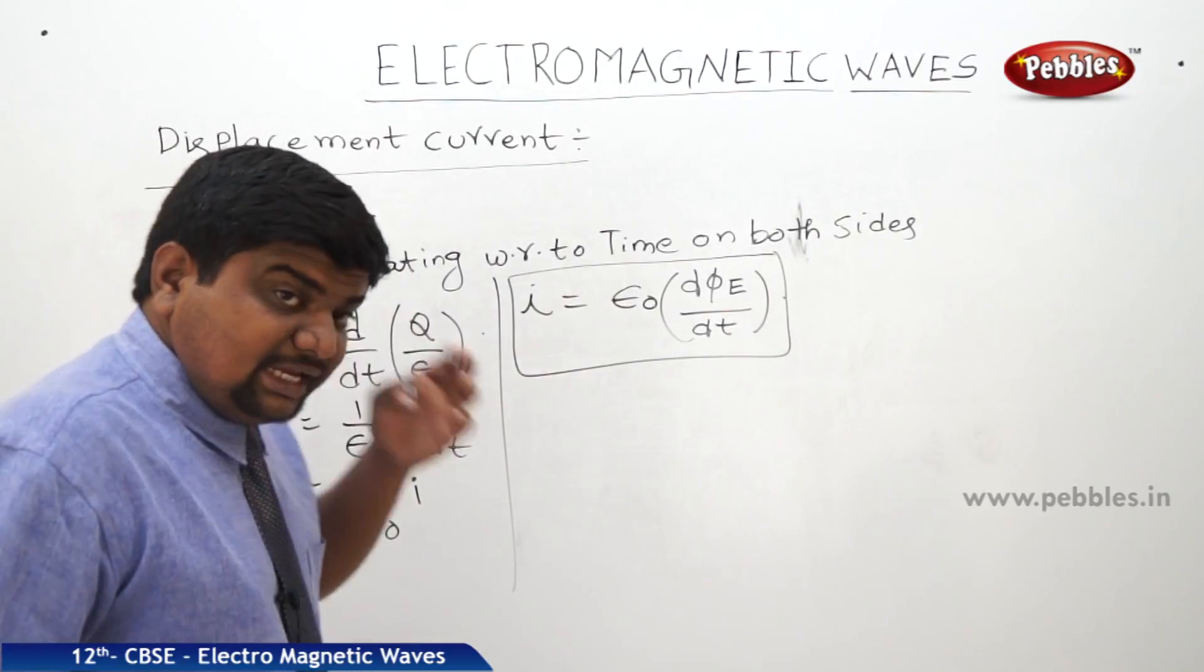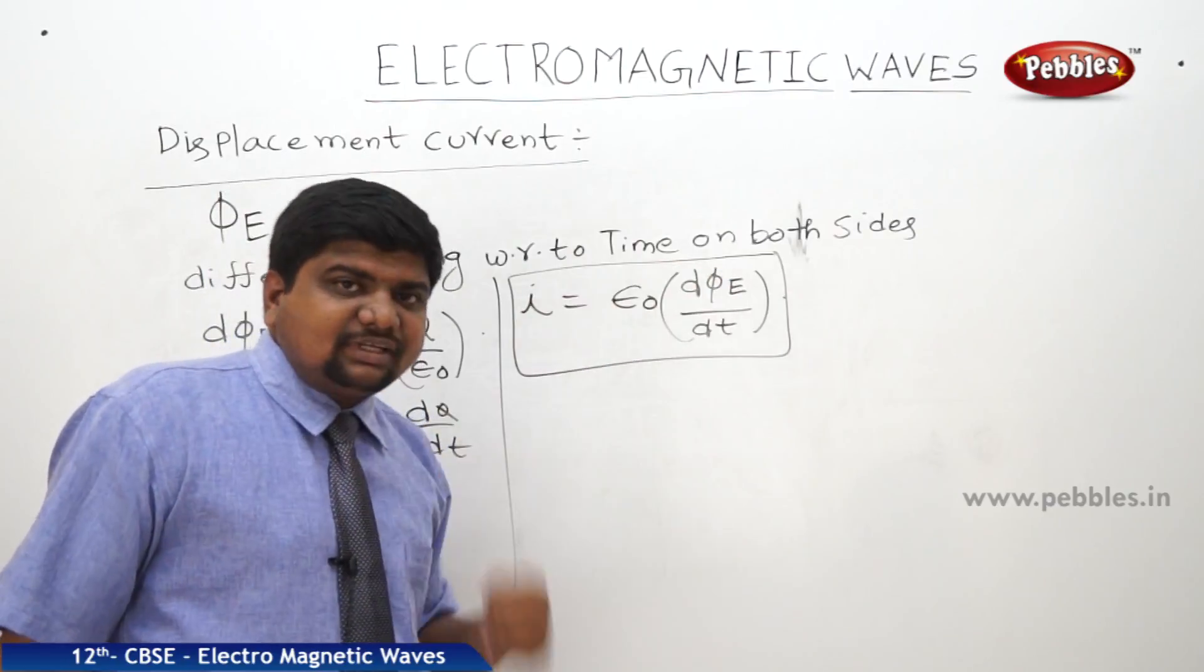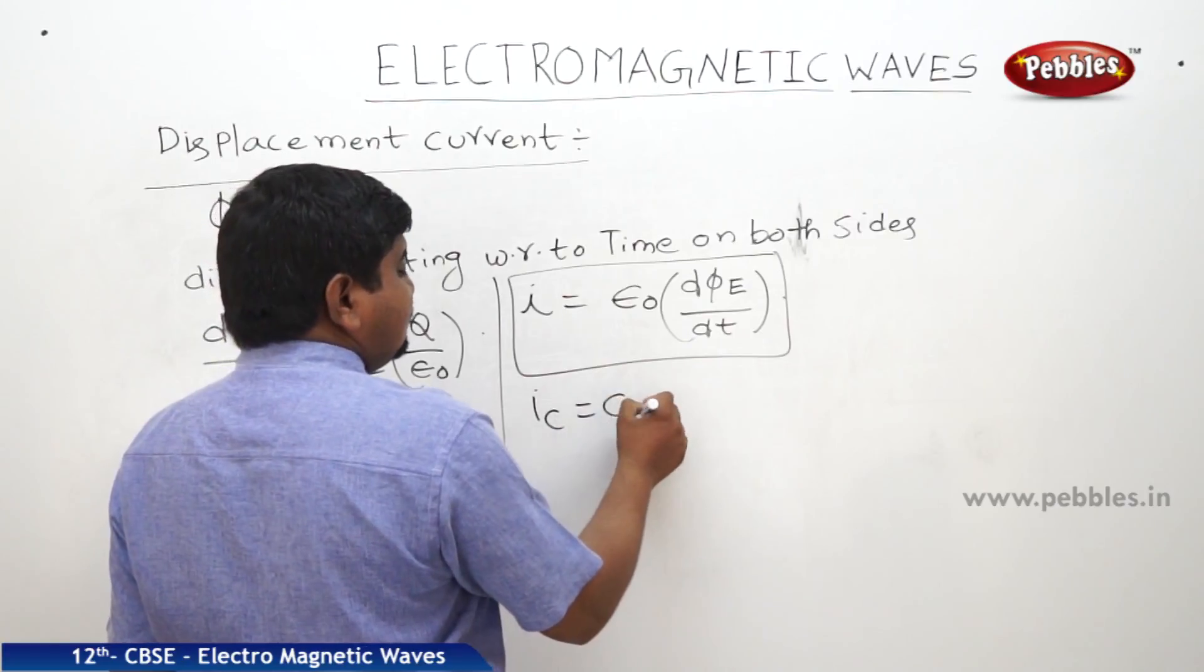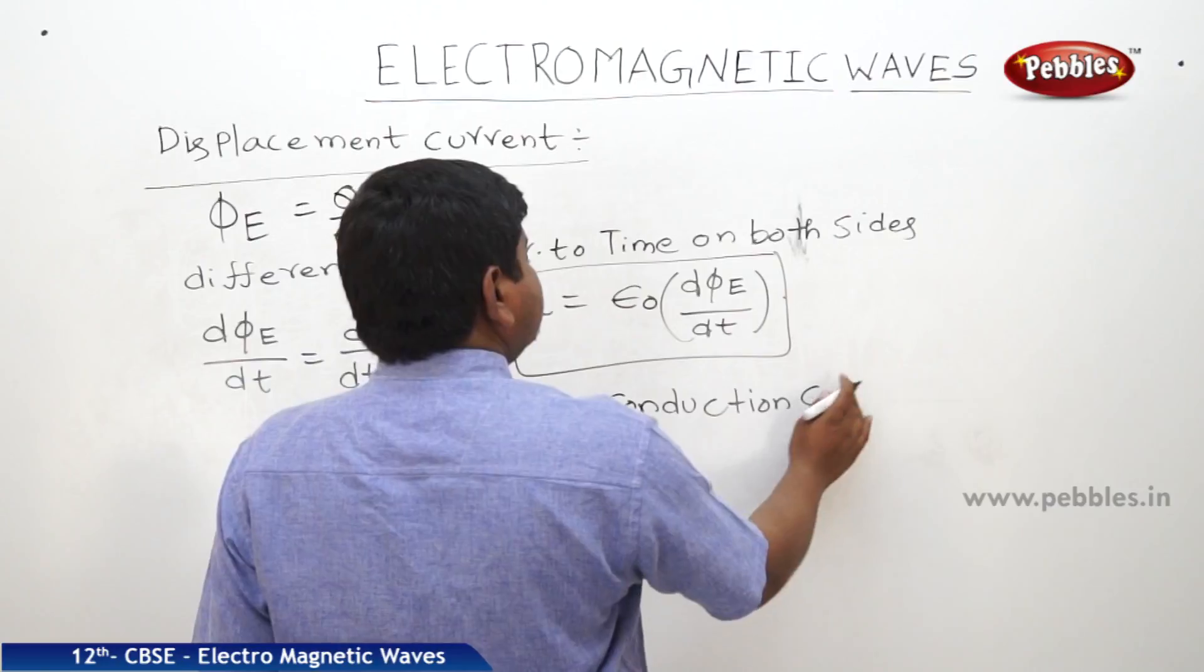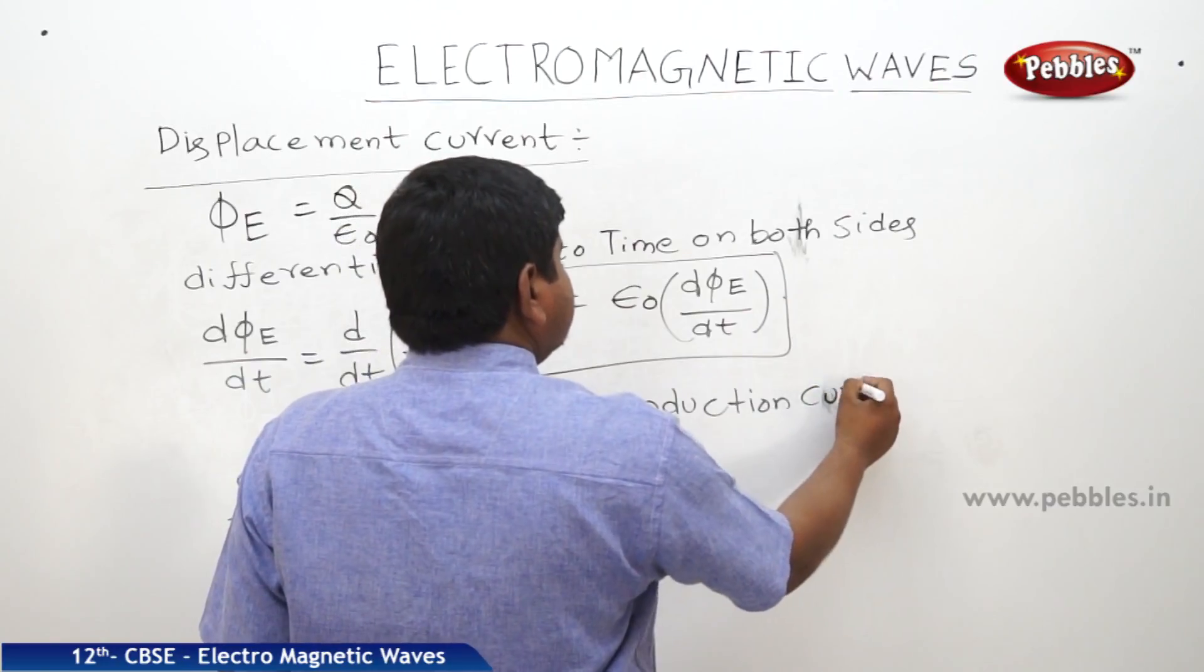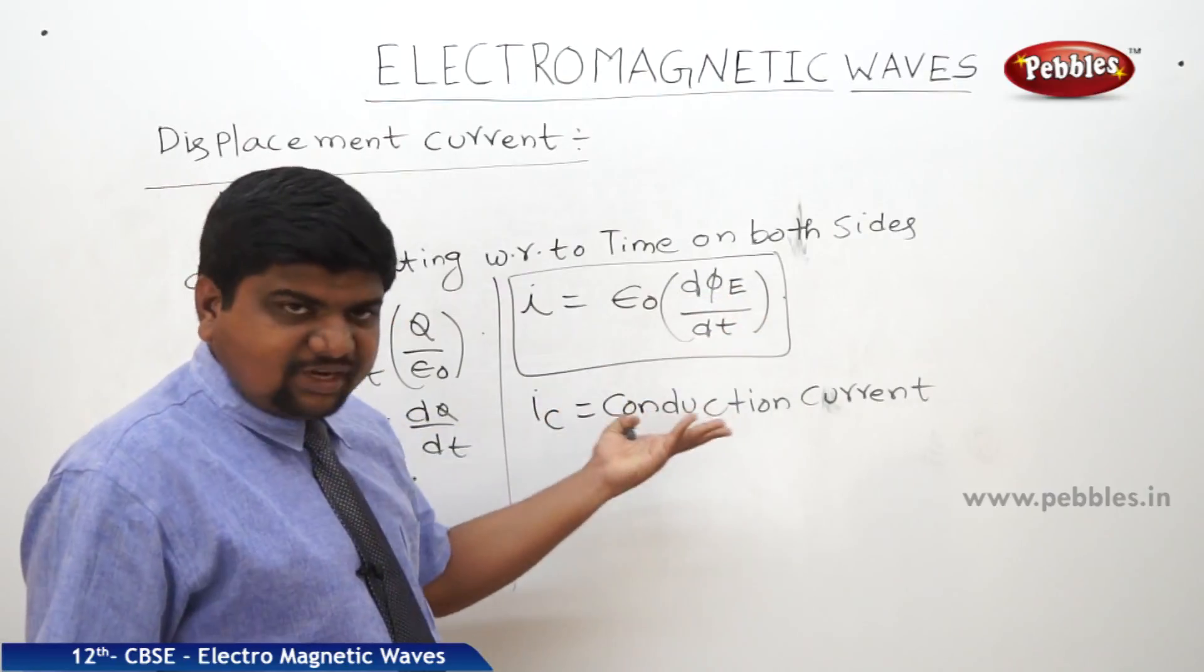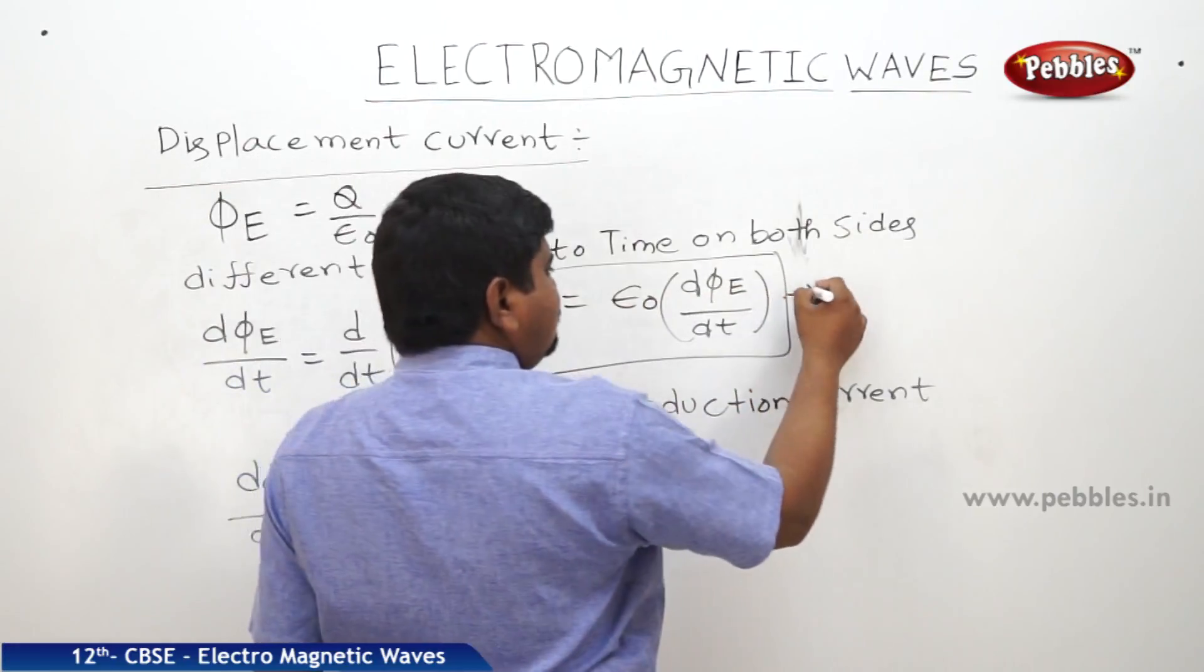Actually, between the capacitor plates, a flux is exchanged that causes the conduction of the current. That's why that current is called IC, conduction current. Conduction current is not dependent upon the flux or epsilon naught, means this is a new type of current.